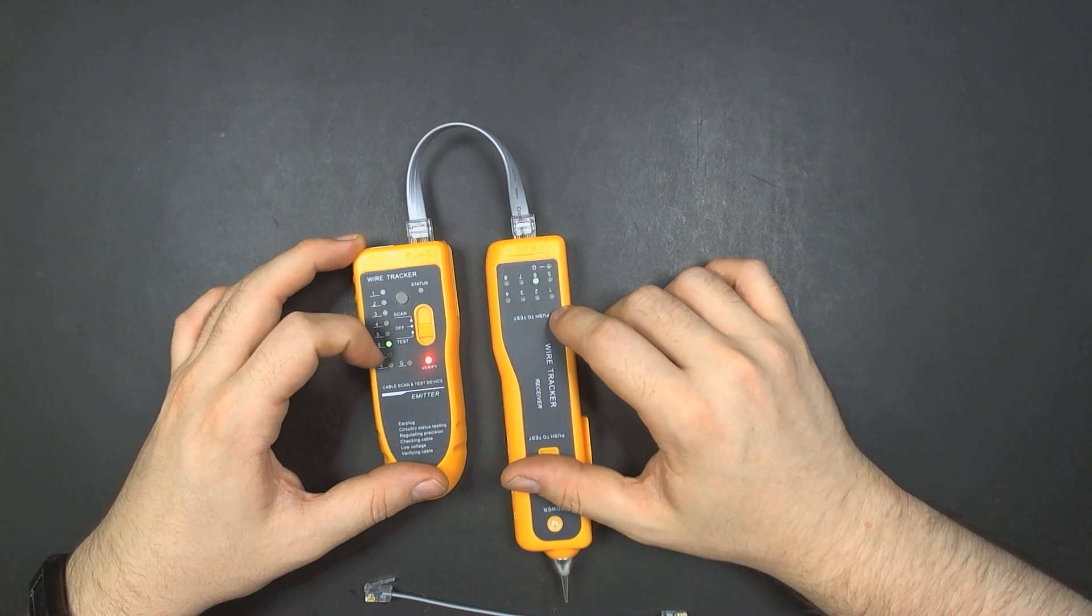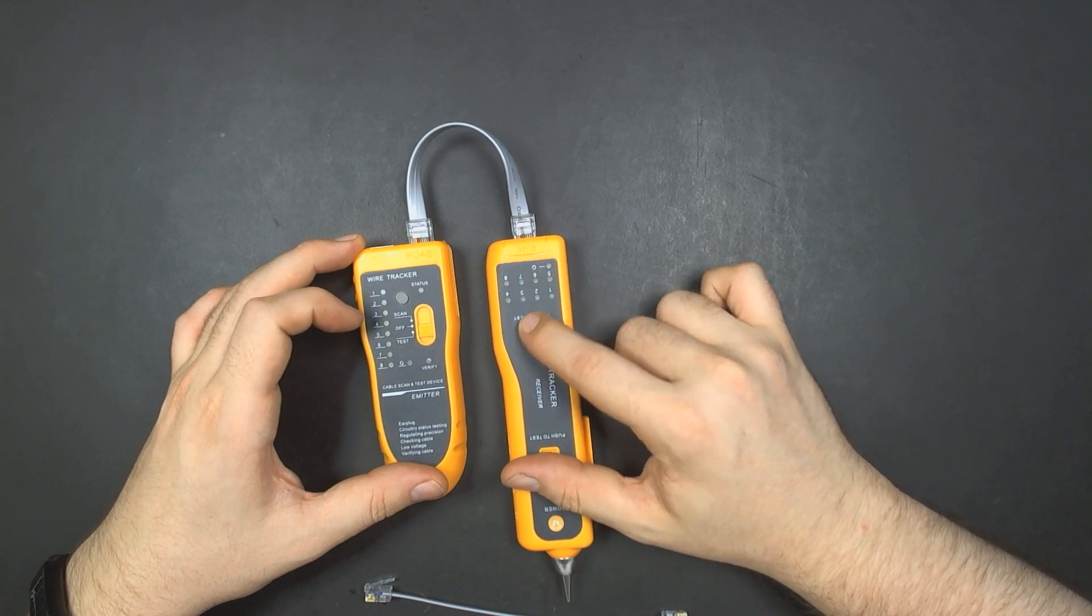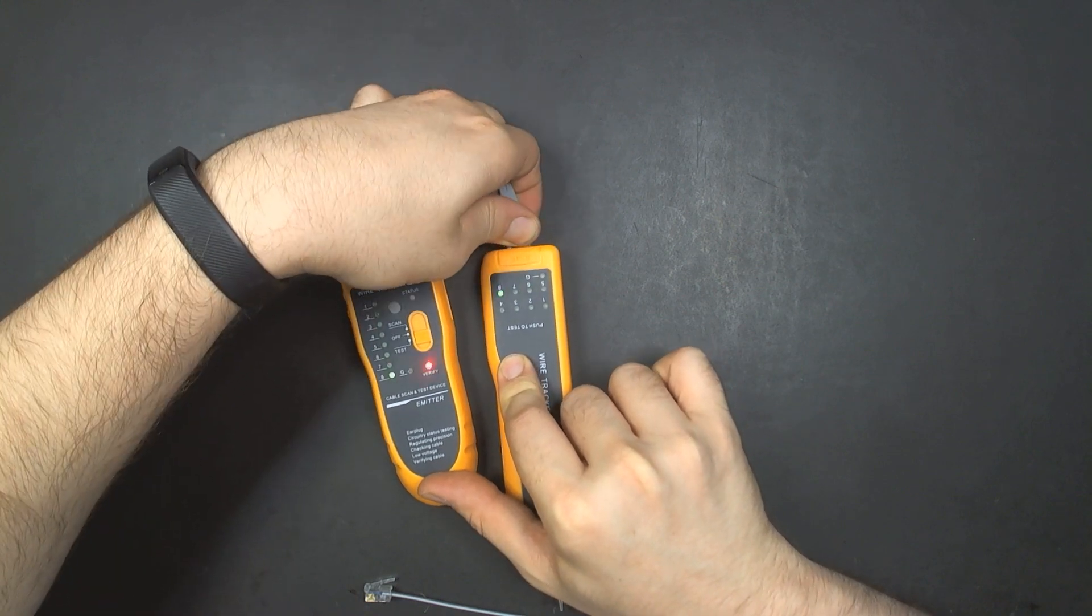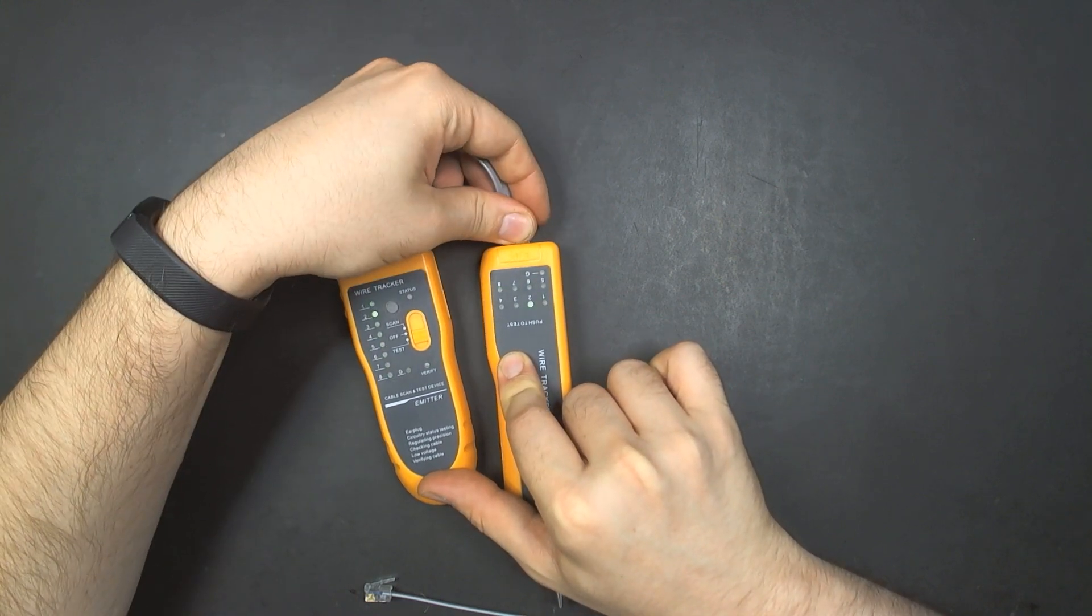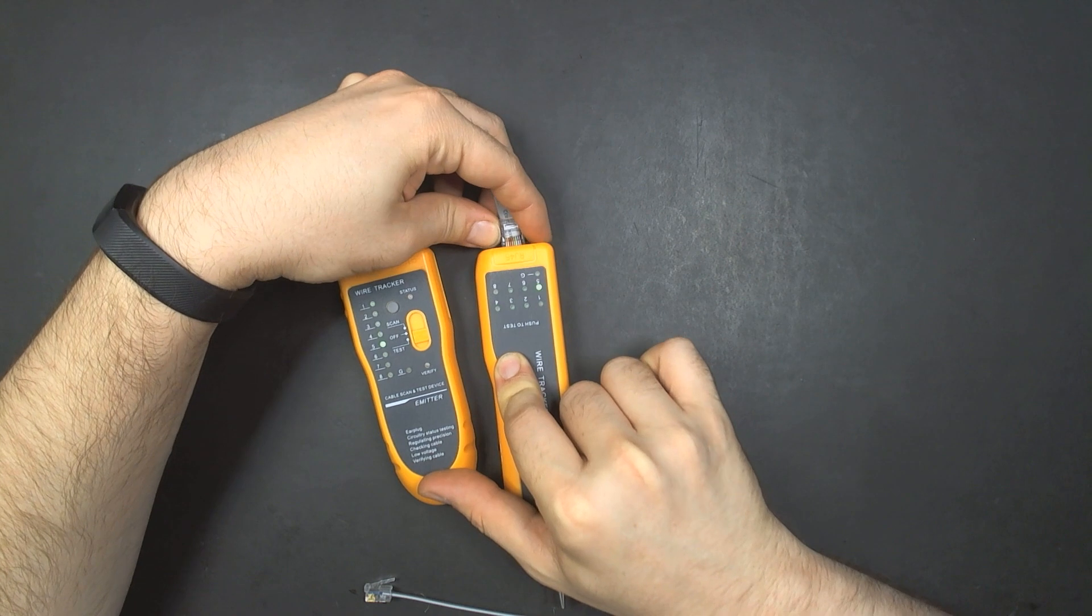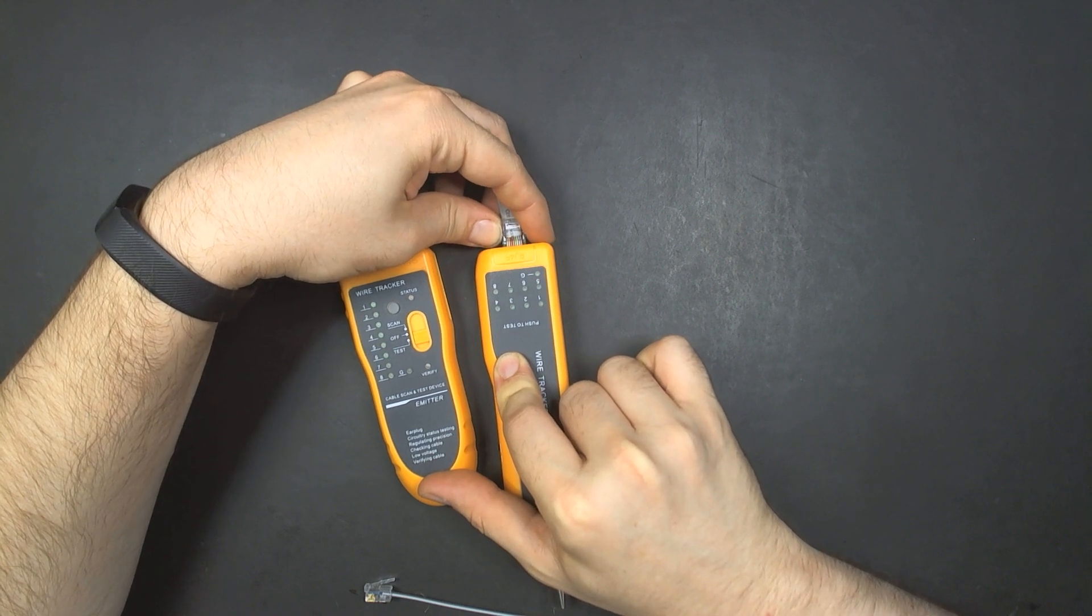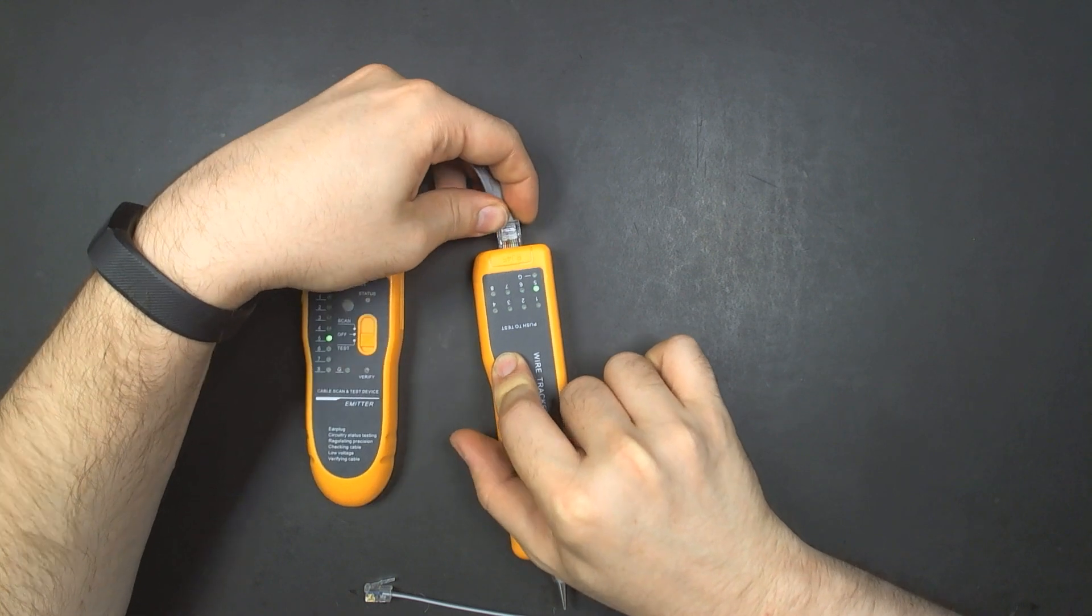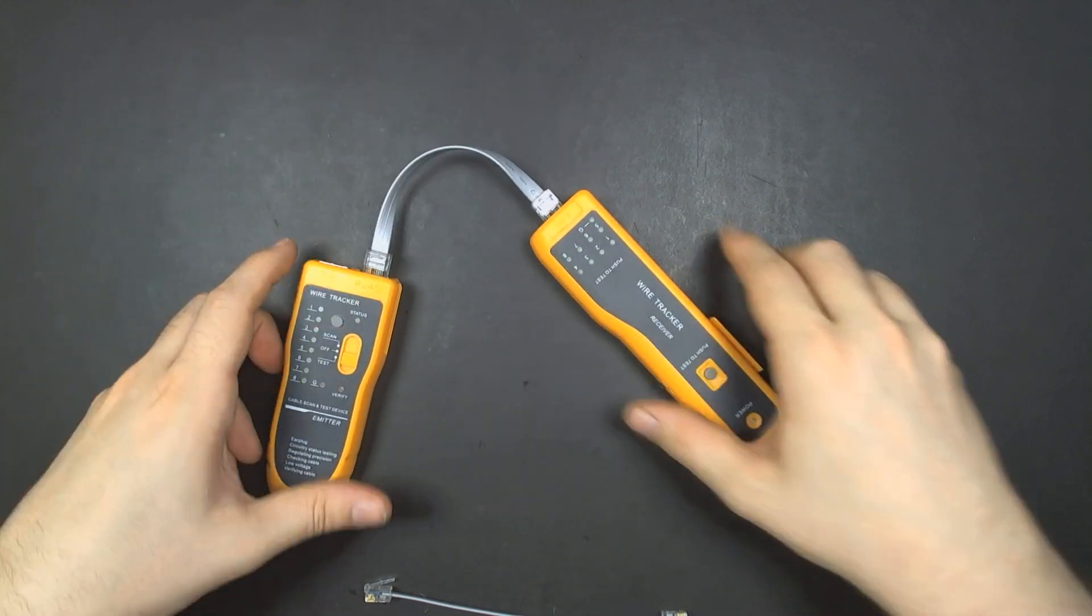It's going to go 1, 2, 3, 4, 5, 6, 7, 8 and you'll see the sequence. If the sequence is reversed or some don't show up, you probably got a staple through one of your cables or the wires are crossed. It's plenty good for diagnosing basic problems like that.